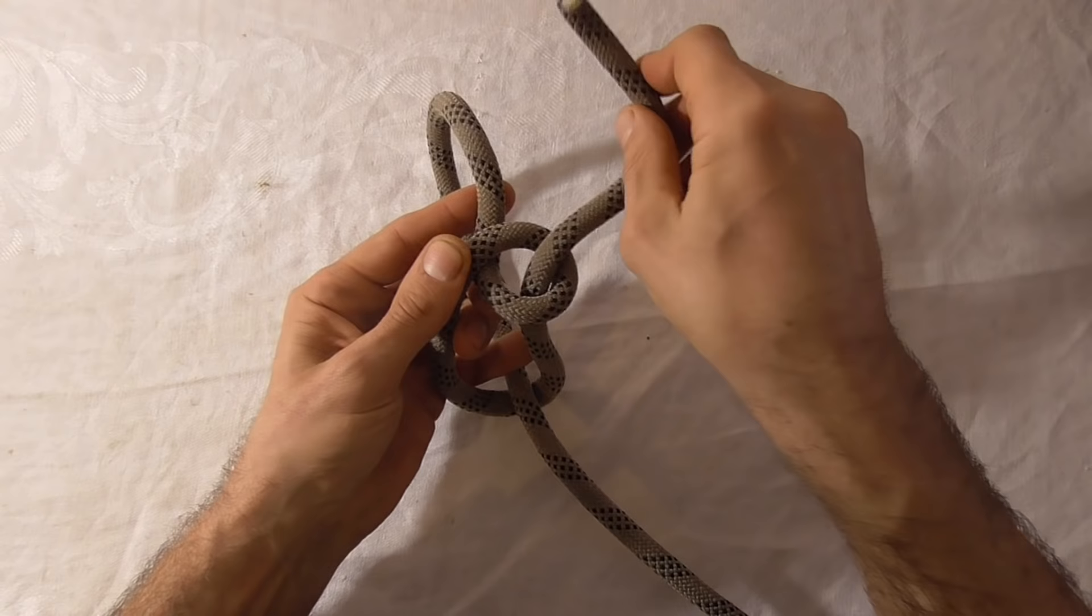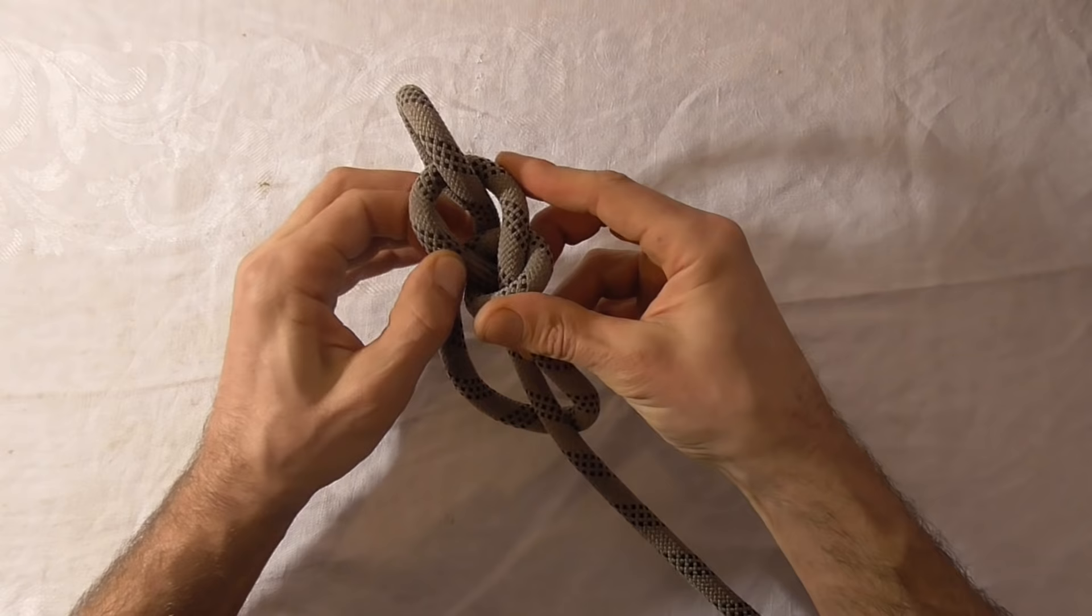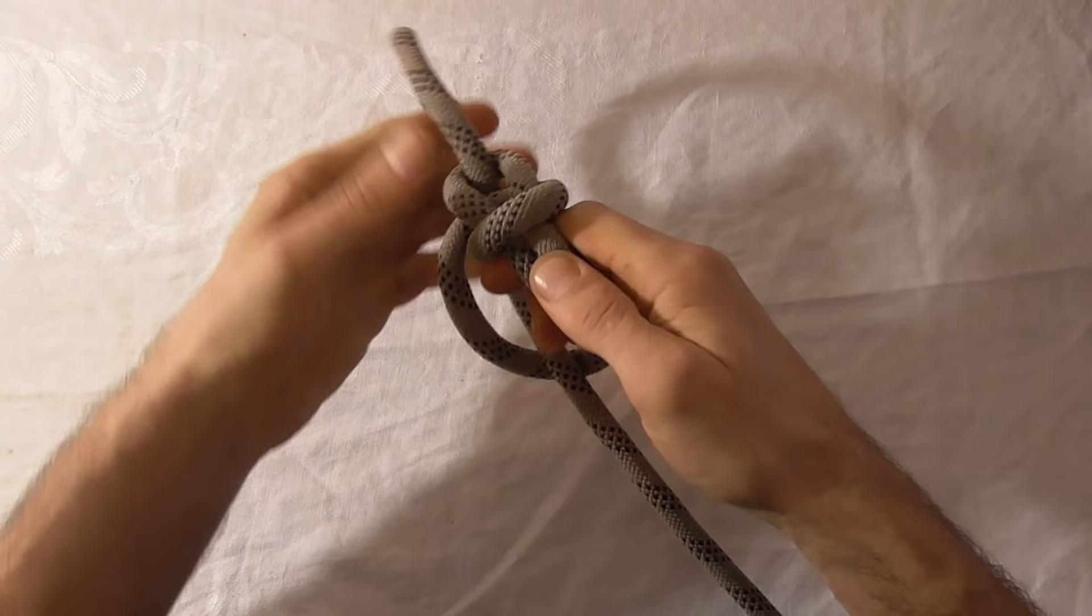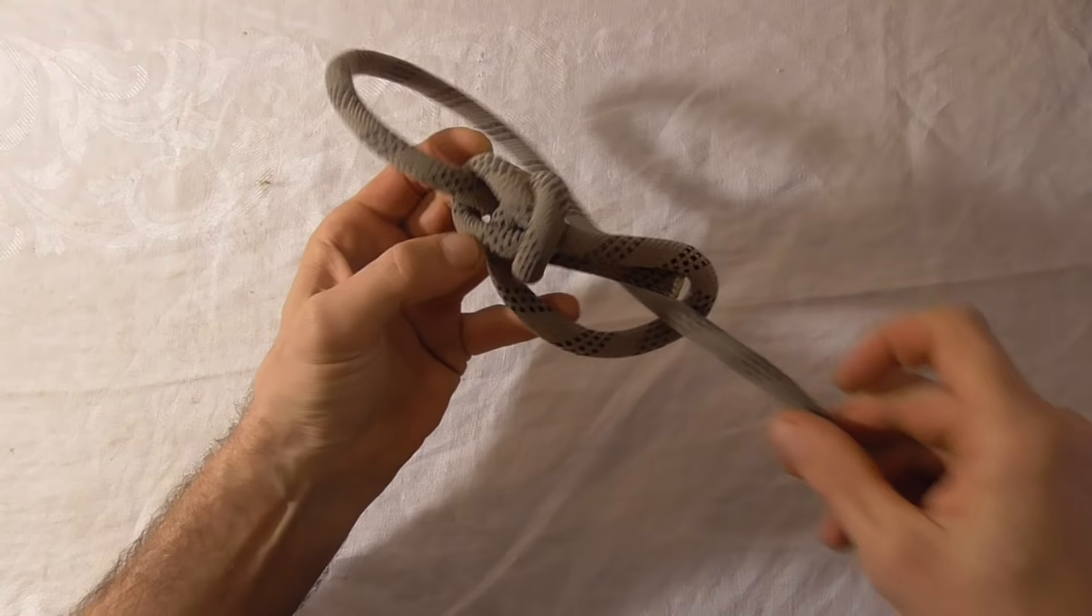of the standing part, and then back down through that loop. Then tighten it off. All you've done is tied a bowline around this standing part to form a sliding noose.